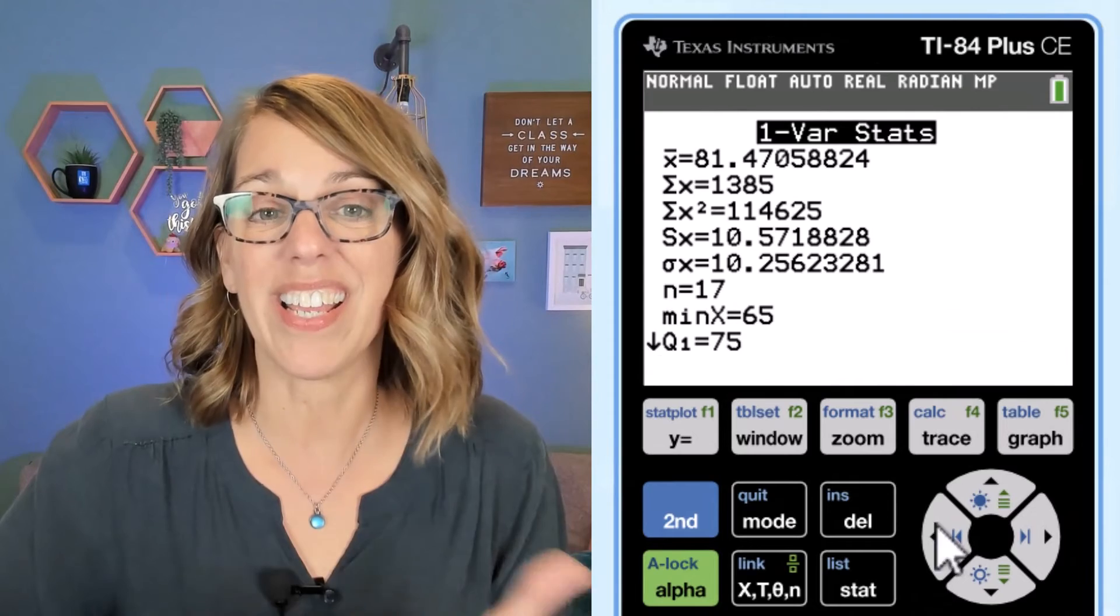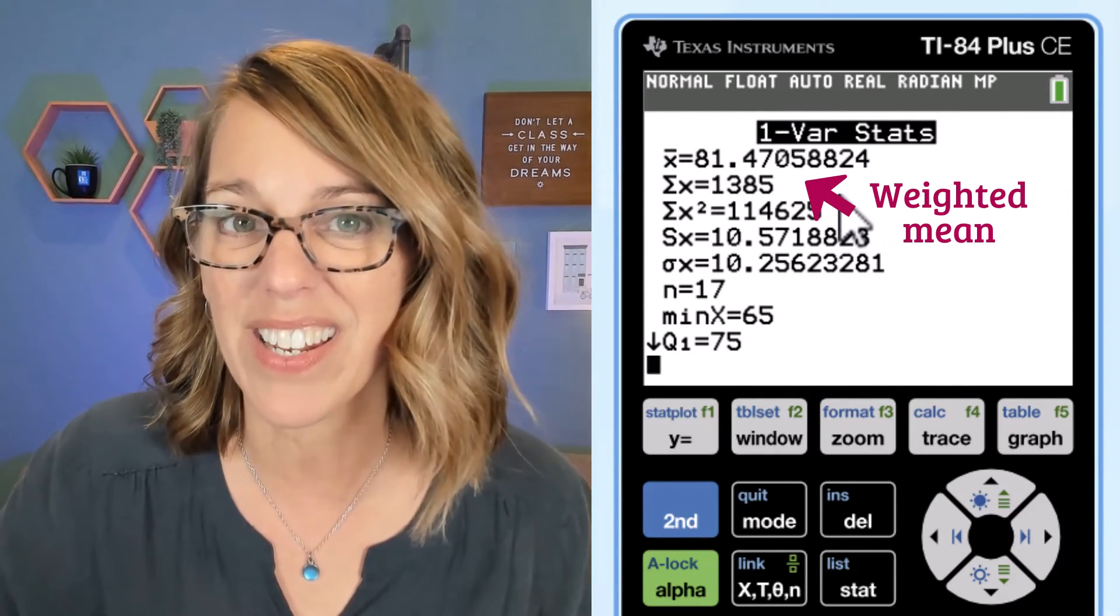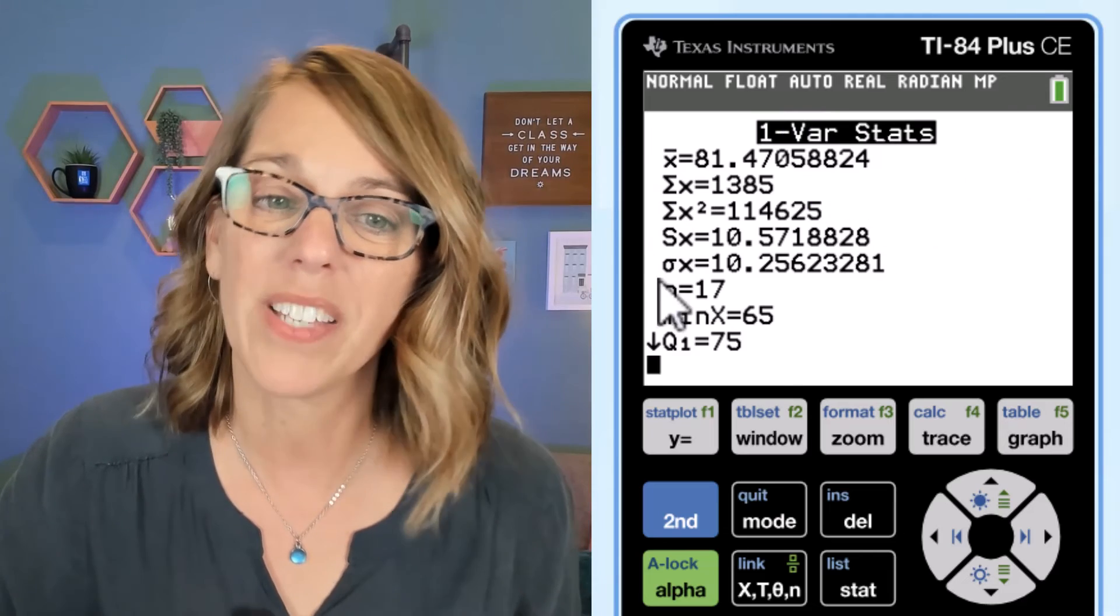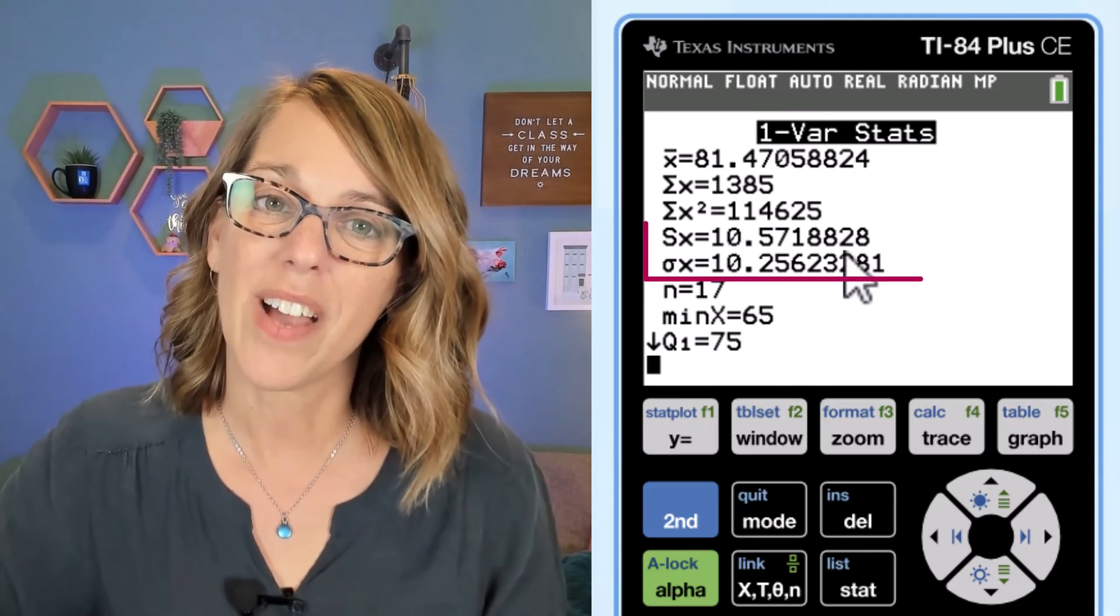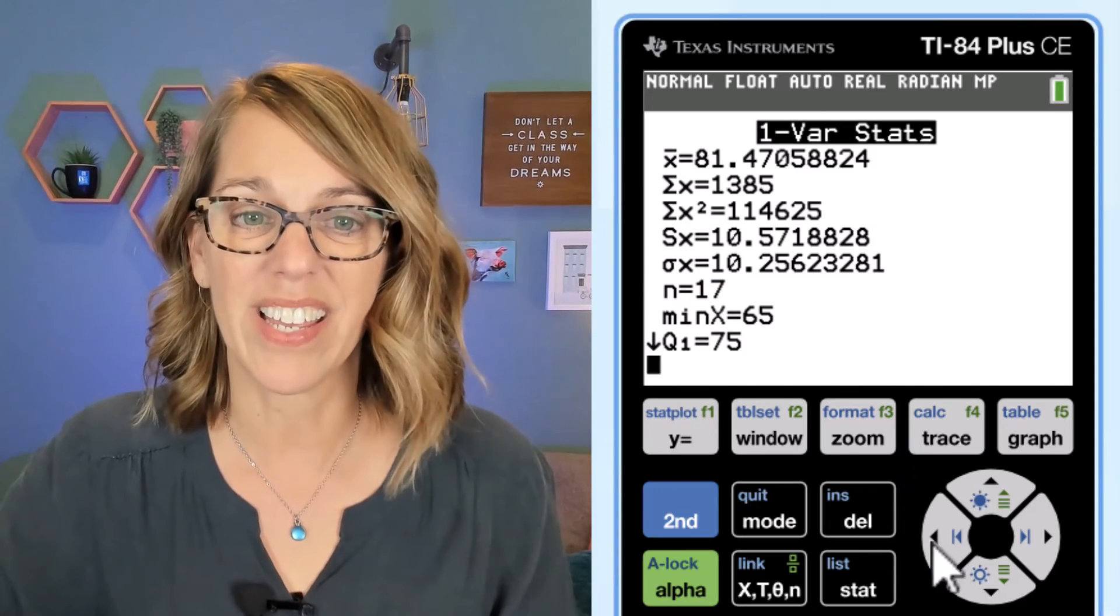Now what I have here is my weighted mean. So this 81.47 is my weighted mean. If I skip down just a little bit, I've got my sample and my population standard deviation for that list.